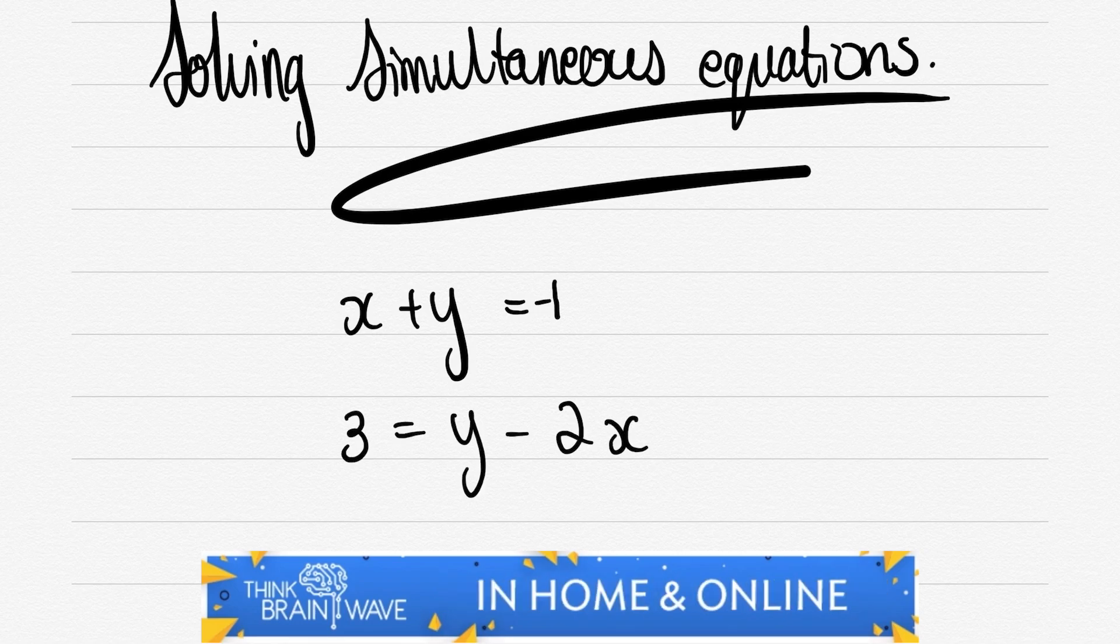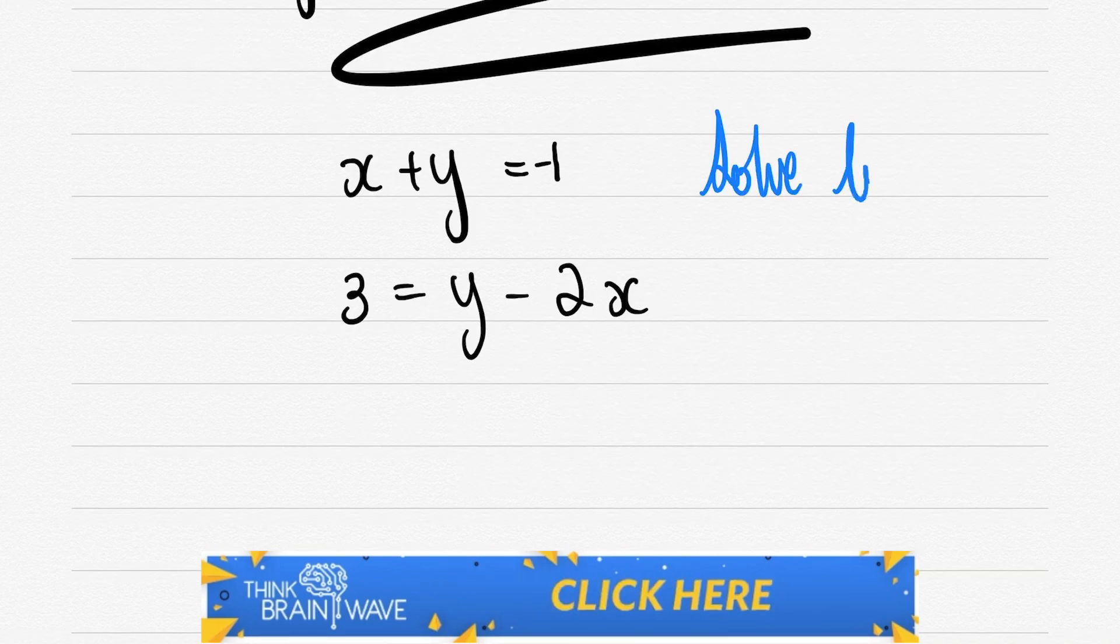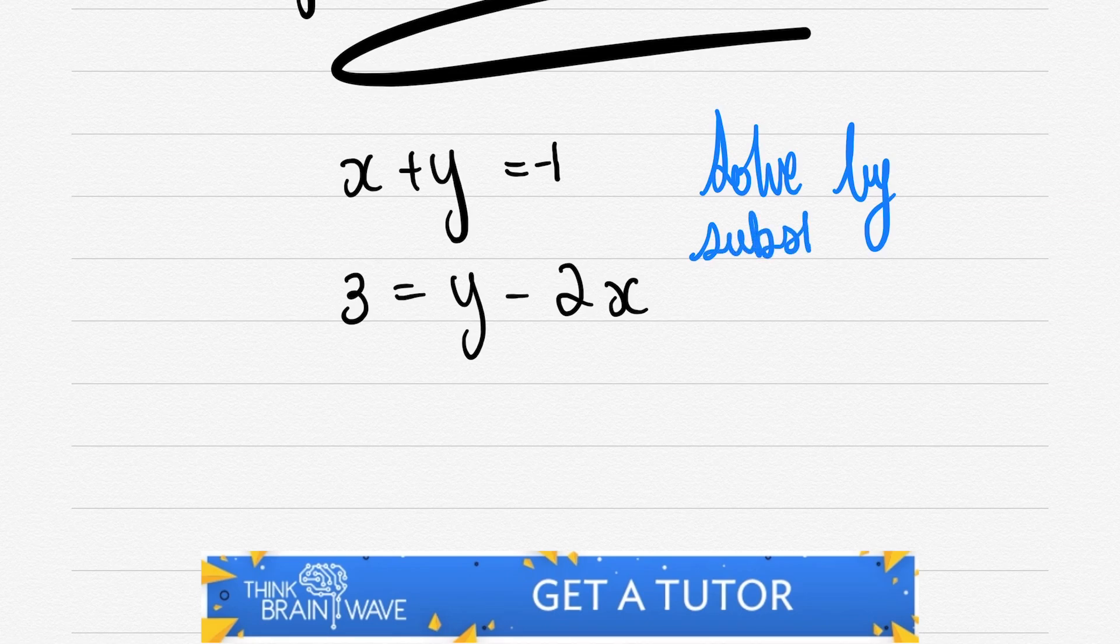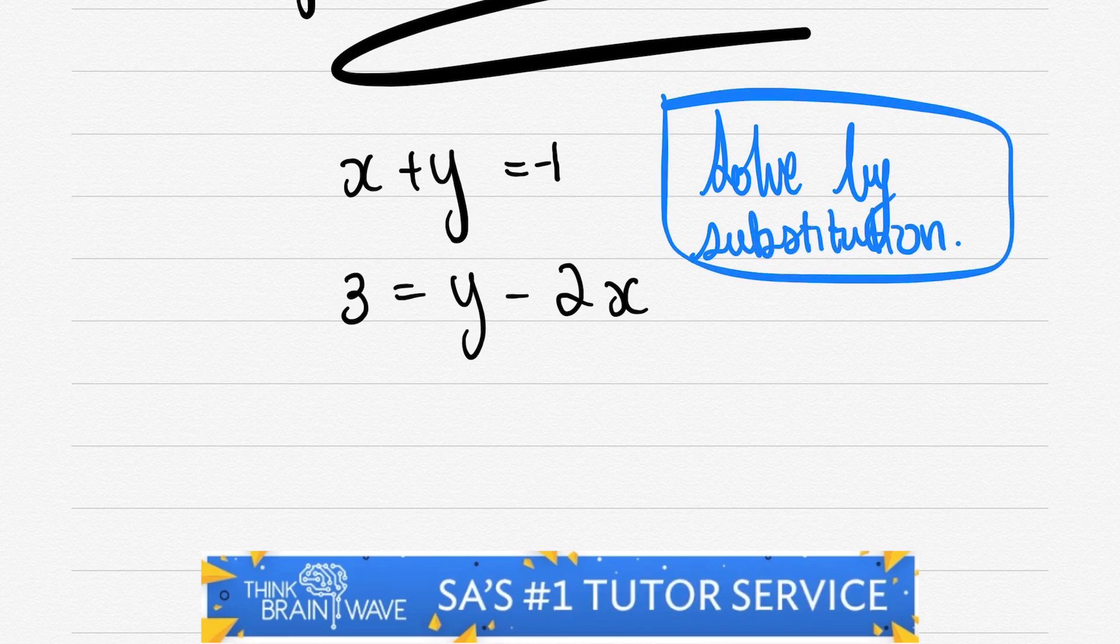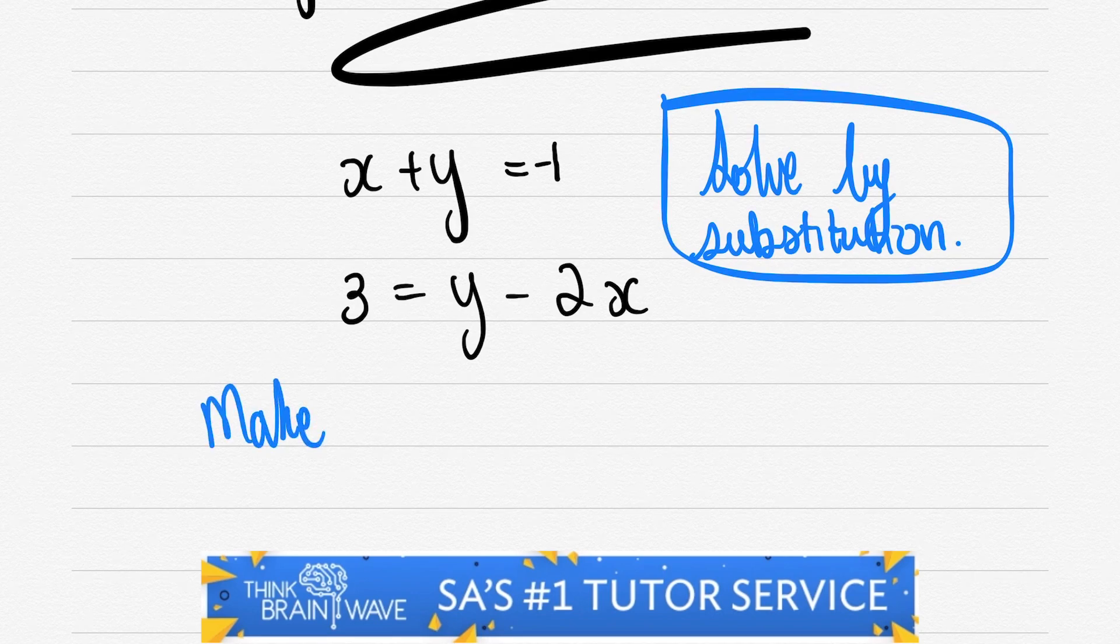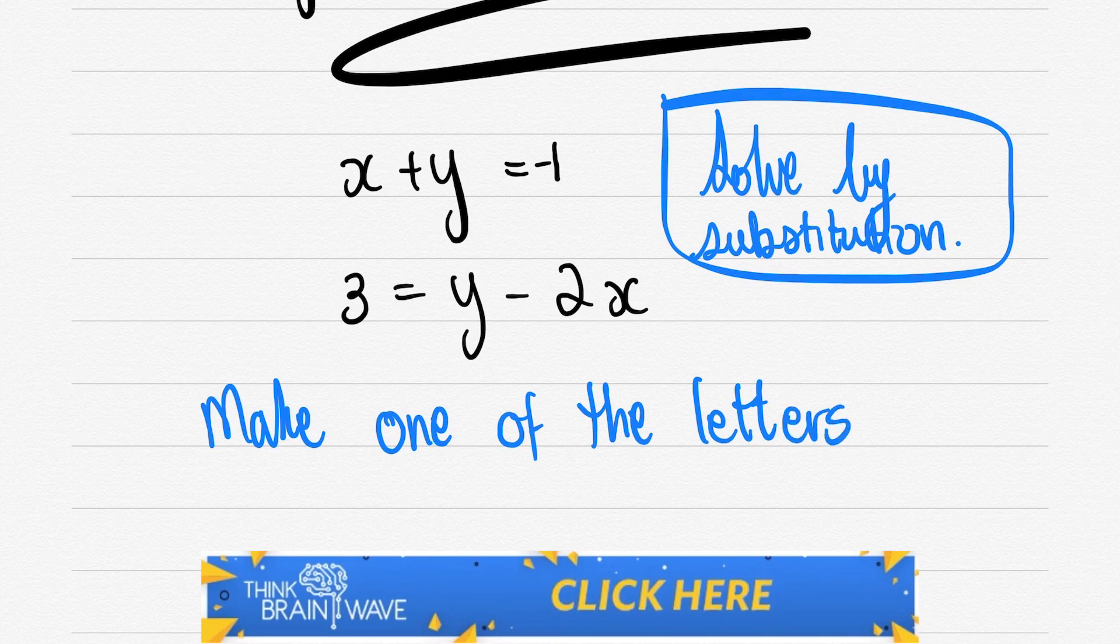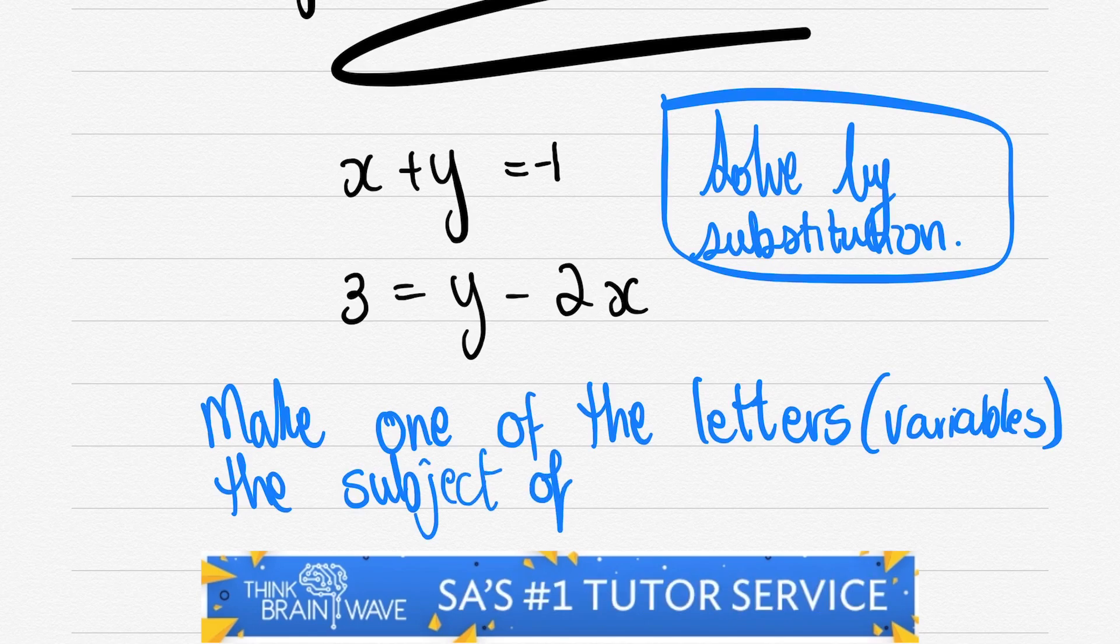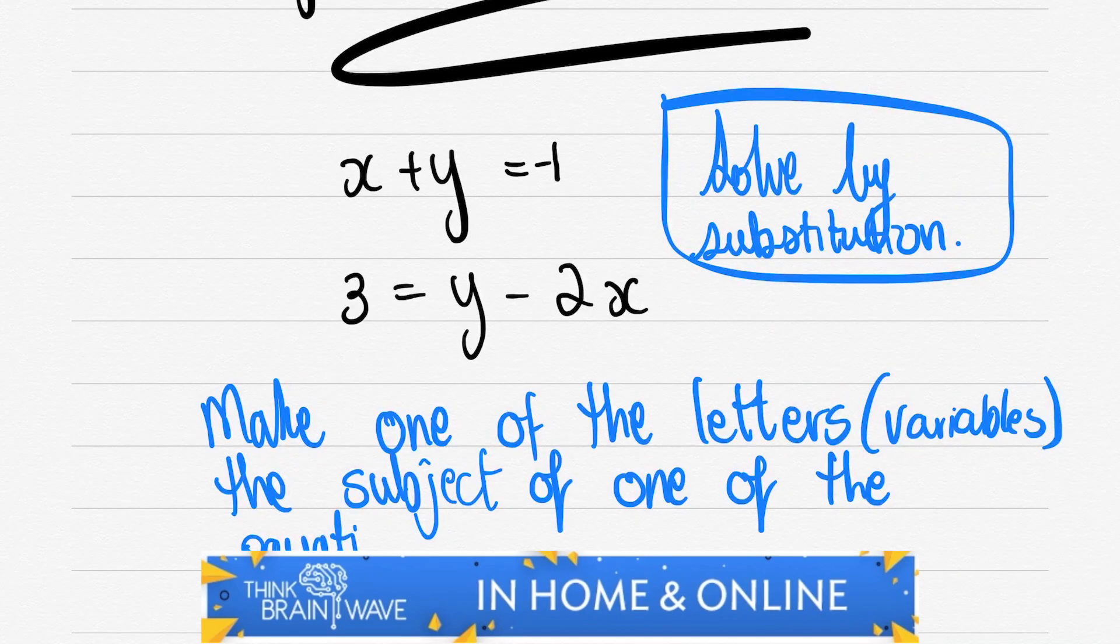We'll have 3 = y - 2x. We will solve by simultaneous equations by substitution. We'll make one of the letters, otherwise known as variables, the subject of one of the equations.